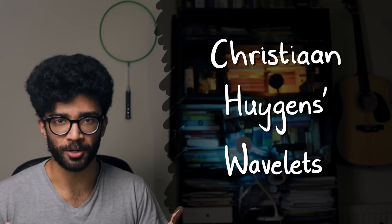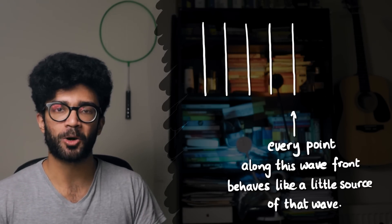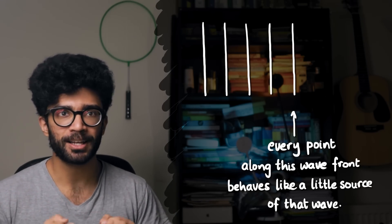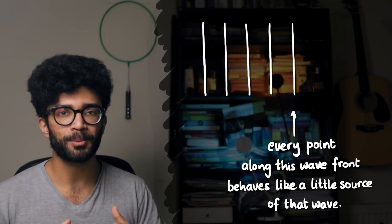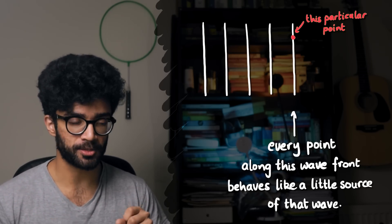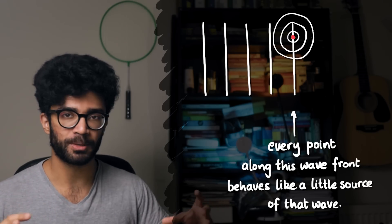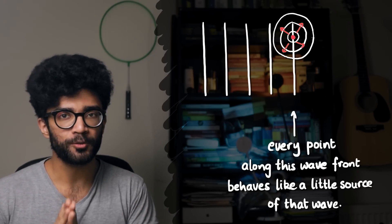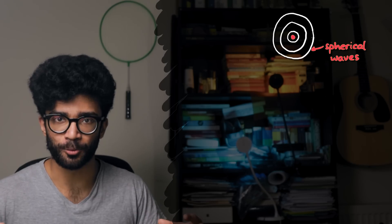This particular scientific model I'm going to talk about will help you visualize why waves behave this way, rather than just accepting that they do. The first version of this model is known as Huygens' Wavelets, named after Christian Huygens, a Dutch physicist. Huygens proposed that waves moving through space can be thought of in the following way: every single point along a wavefront — say, every single point along a peak of a wave — behaves like a source of that kind of wave. That particular point behaves like a source of light waves, and those light waves propagate from that source in all directions at the same speed.